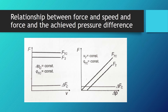In these two graphs we can see the relationship between force and speed, and between force and the achieved pressure difference. The force remains the same if we change the speed, and the real force is smaller than the theoretical force by the amount of force losses. As we change the achieved pressure difference, force obviously rises, and again we can see the difference between the theoretical and real forces.